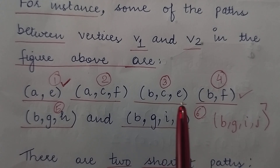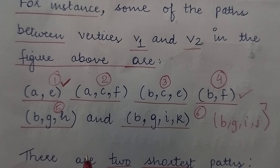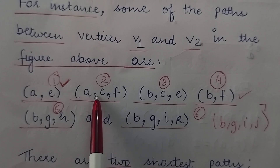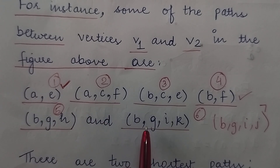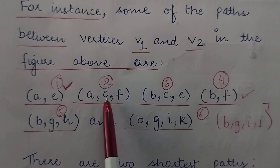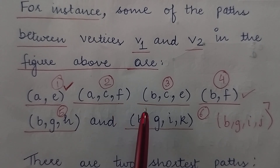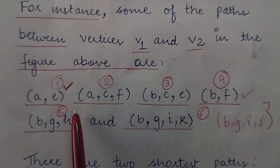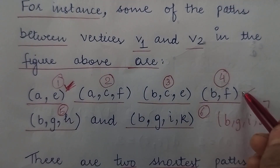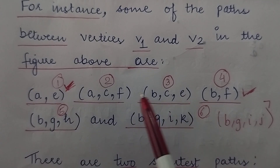These are all the available paths from vertex v1 to vertex v2. Our task is to find out the one with the shortest path, meaning the one with the minimum number of edges. In most of the paths we have either three edges or four edges — for example b, g, i, k has four edges; a, c, f has three edges; b, c, e has three edges; and b, g, h has three edges.